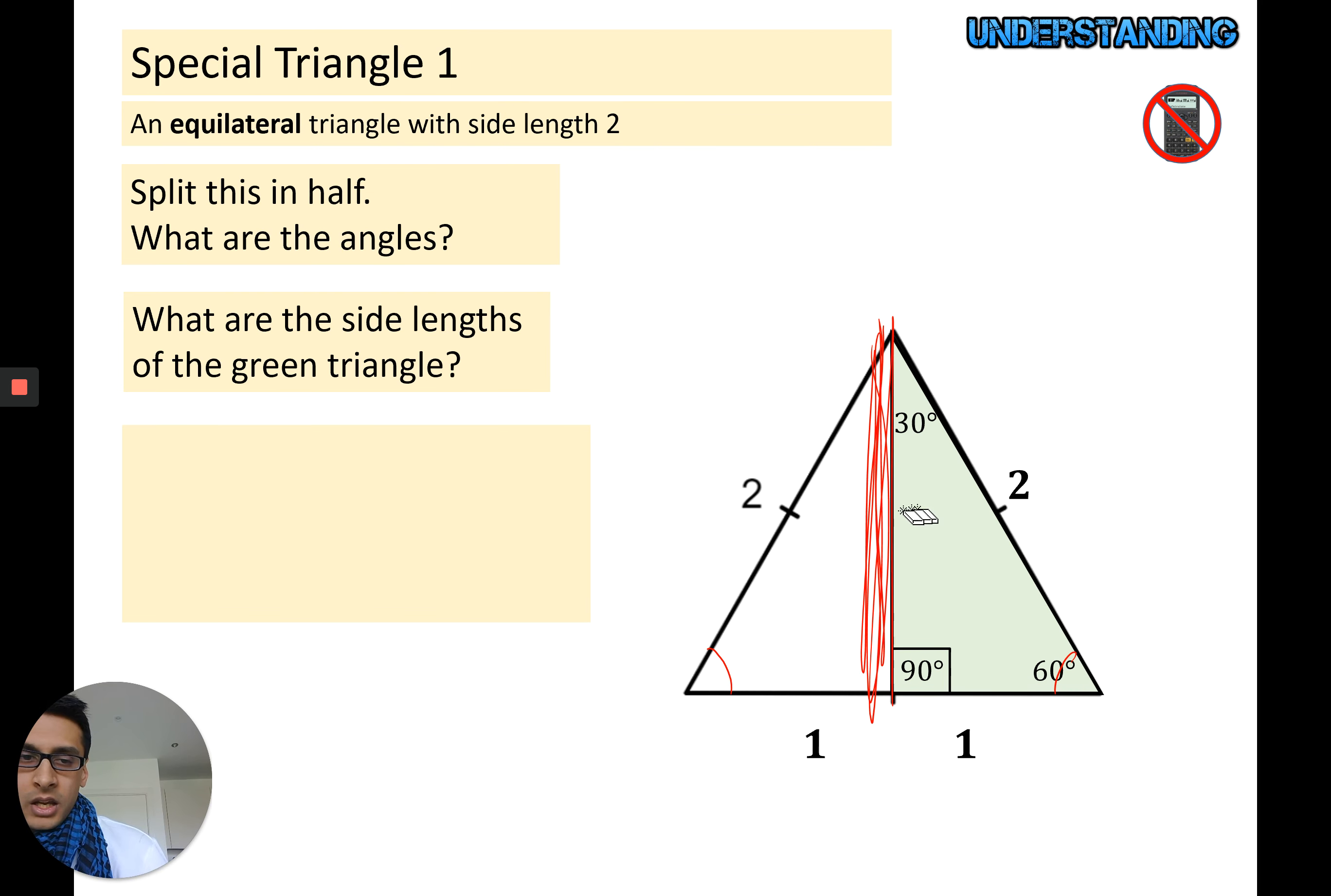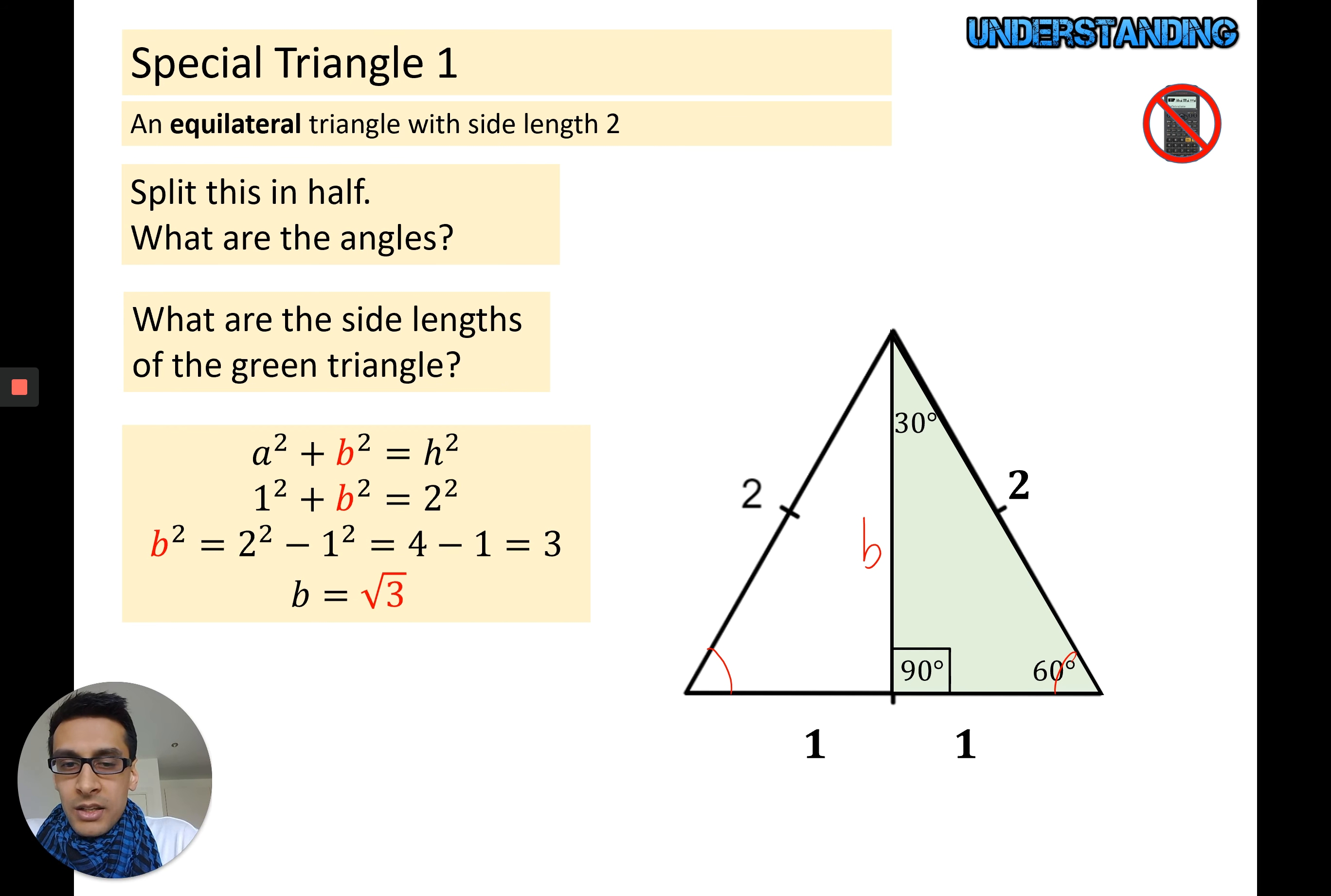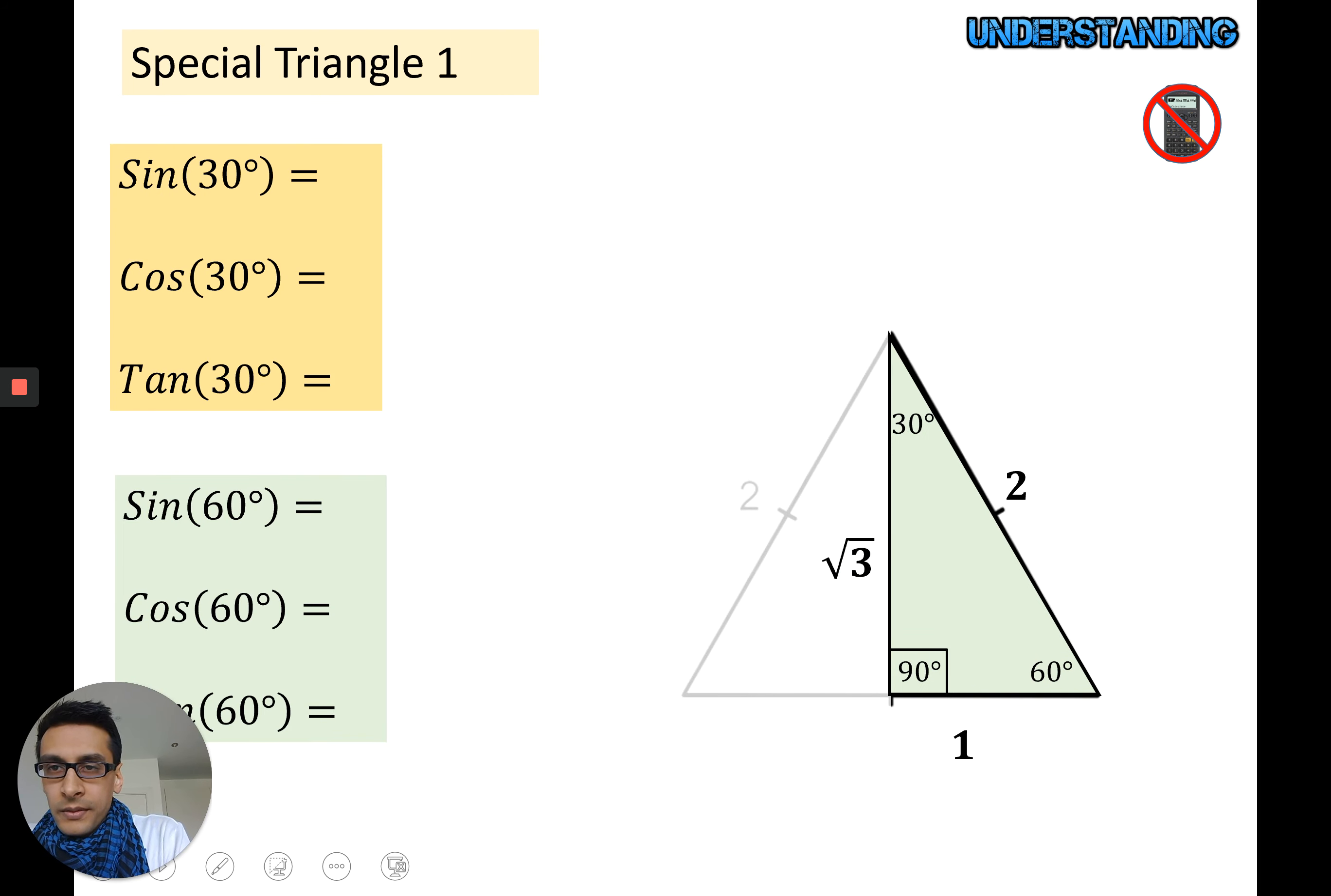You can say one squared plus b squared, let's call this side b, is equal to two squared. You rearrange it and that turns out that b is equal to root three. That is triangle one. Now it's special because from this you can see we've got a 30 degree angle and we've got a 60 degree angle there. We can actually work out some exact trig values from this. Sine 30, well sine is opposite over hypotenuse. If that's the angle we want, that's the opposite and that's the hypotenuse, so sine theta is going to be one over two.